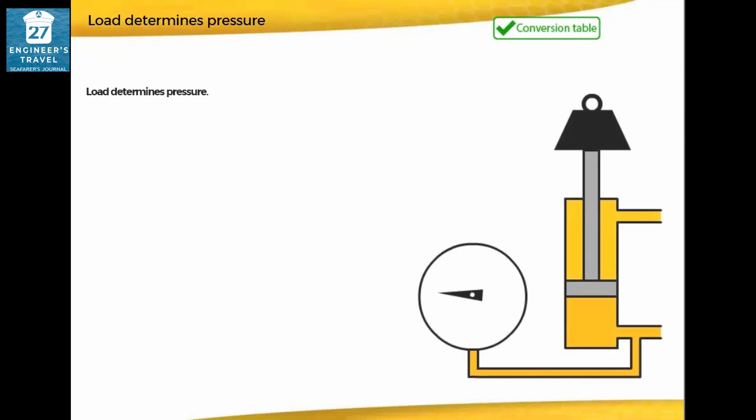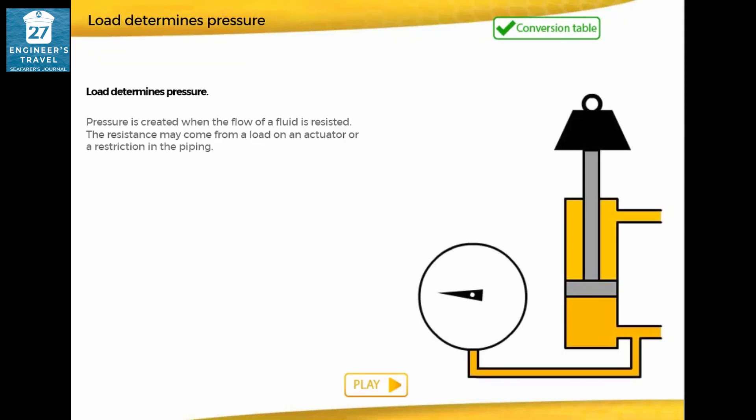Load determines pressure. Pressure is created when the flow of a fluid is resisted. The resistance may come from a load on an actuator or a restriction in the piping.